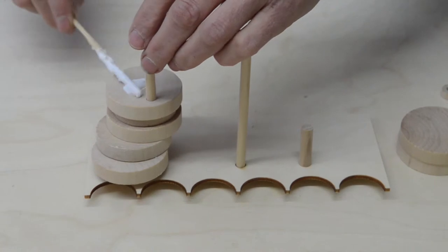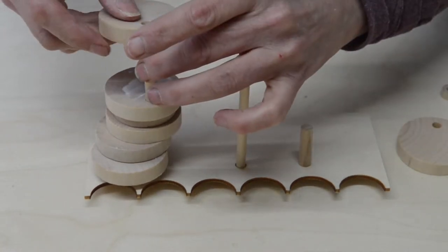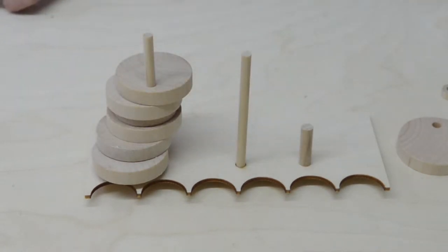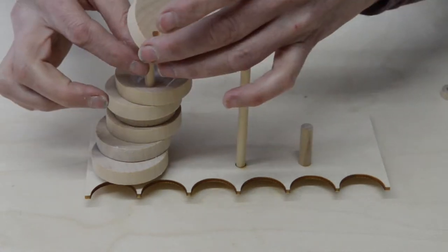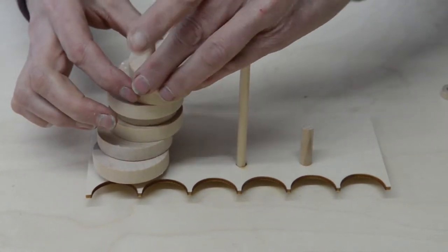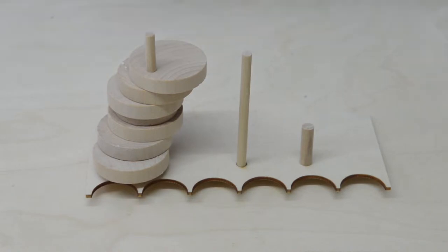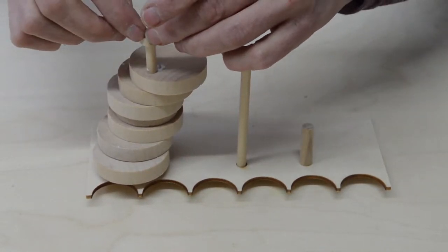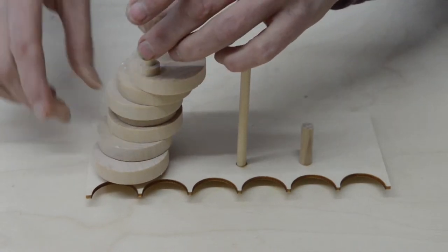Now you start to spiral again, going in the same direction. Then last of all, a small amount of glue just for the last spacer.